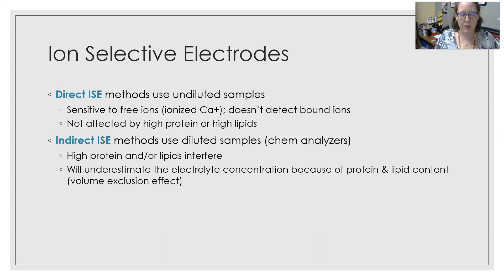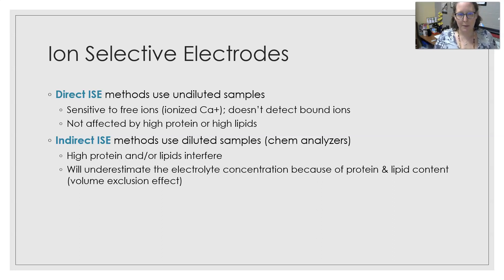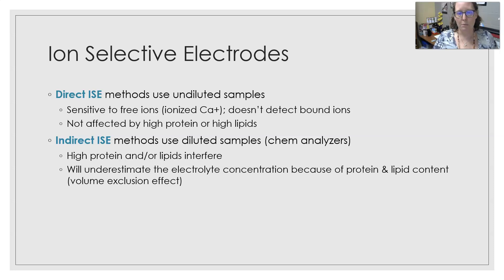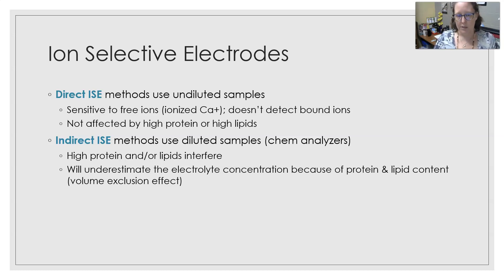Direct ISE methods are very sensitive to free ions but do not detect bound ions. The advantage is that they are not affected by high protein or high lipid content. This method is often used to measure ionized calcium. The indirect ion selective electrode methods use diluted samples and are used in most large chemistry analyzers. However, high protein content and lipemia can interfere with readings and tend to underestimate electrolyte concentration — this is called the volume exclusion effect.